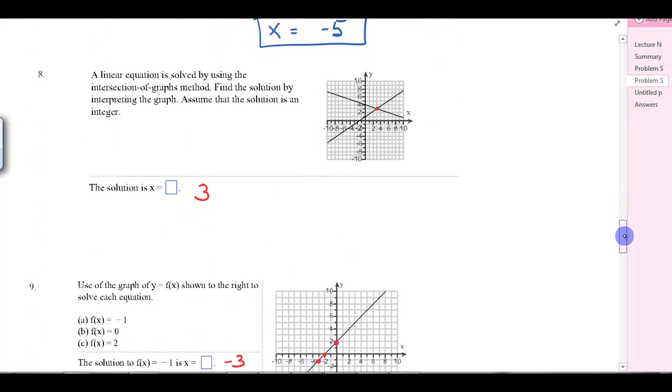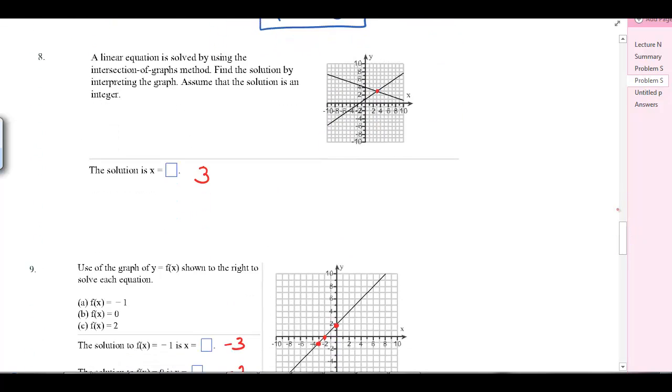Number 8 just shows you a graph and you've got two linear equations and you're supposed to find the intersection. You're just interpreting the graph. This is over at x equals 3 and up at 3. So this is 3, 3, that point. The solution is just the x value, so it is x equals 3.